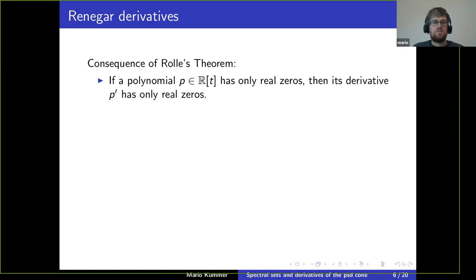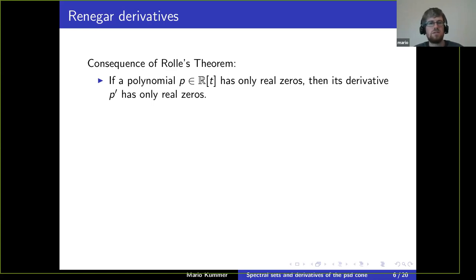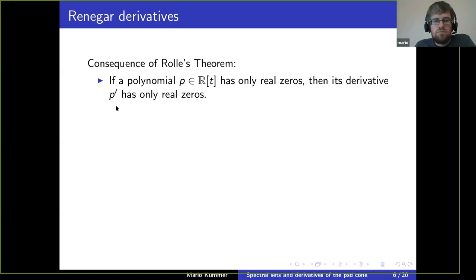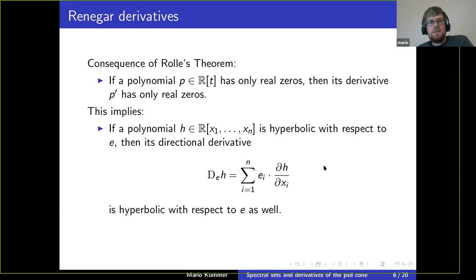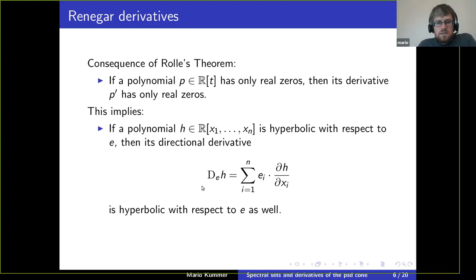One operation is taking derivatives. If you have a univariate polynomial of degree d with only real zeros, then I claim its derivative also has only real zeros. This is a direct consequence of Rolle's theorem, which says that between each two real zeros of p there must be a real zero of p'. So there are d-minus-one real zeros of p', and this is exactly the degree. We can translate this to the multivariate setting: if a polynomial is hyperbolic with respect to e, then its directional derivative in direction e is also hyperbolic with respect to e.